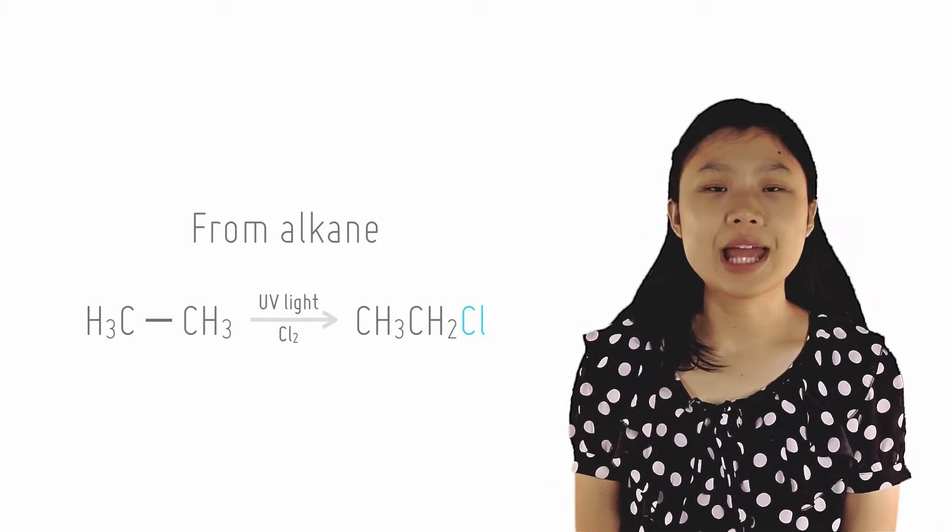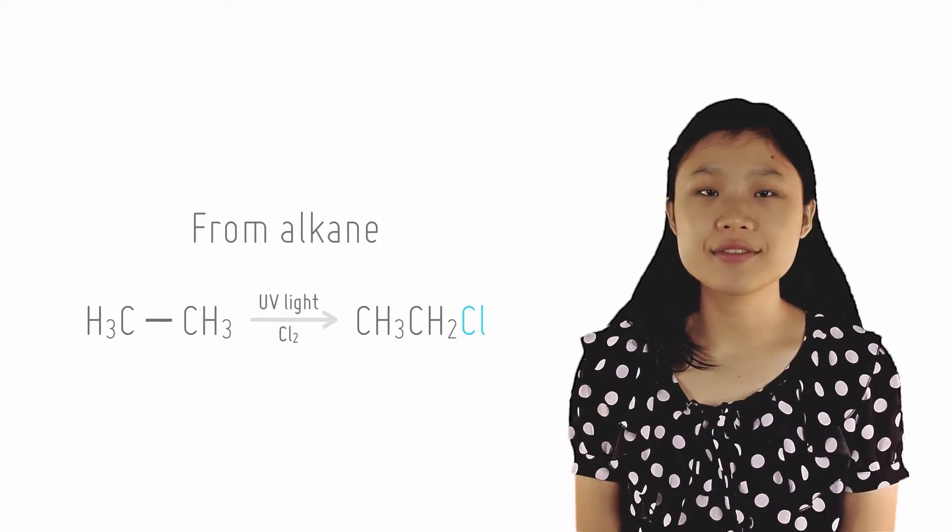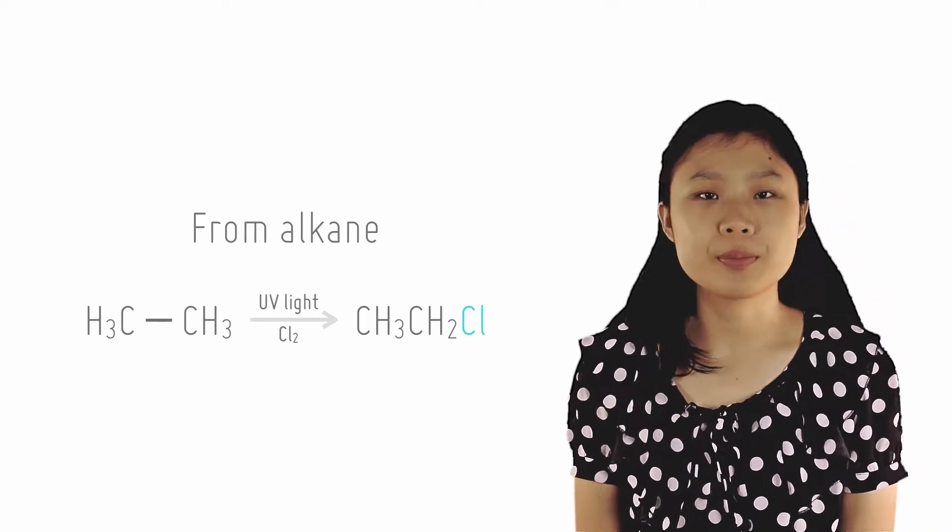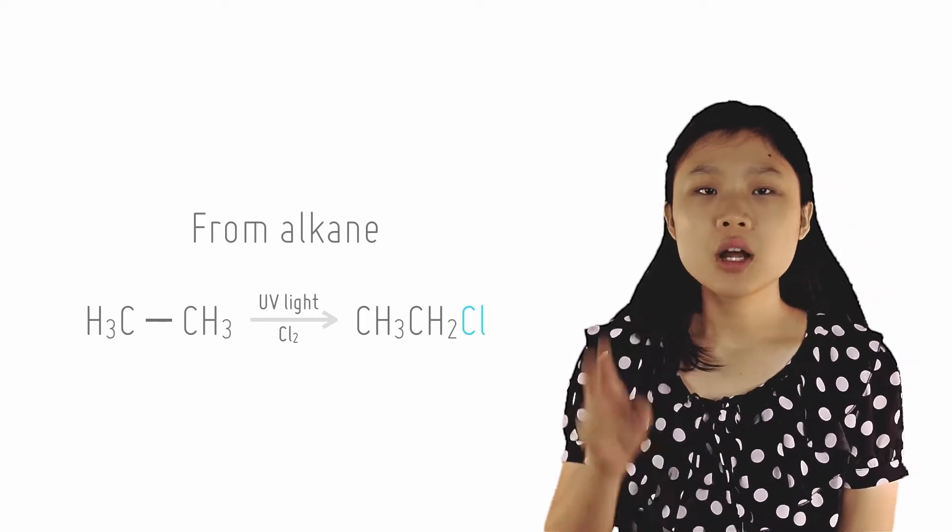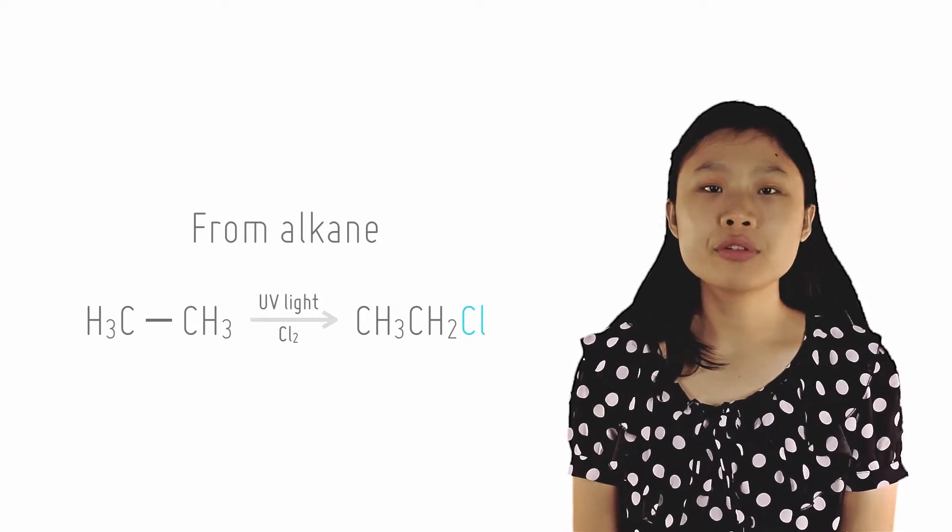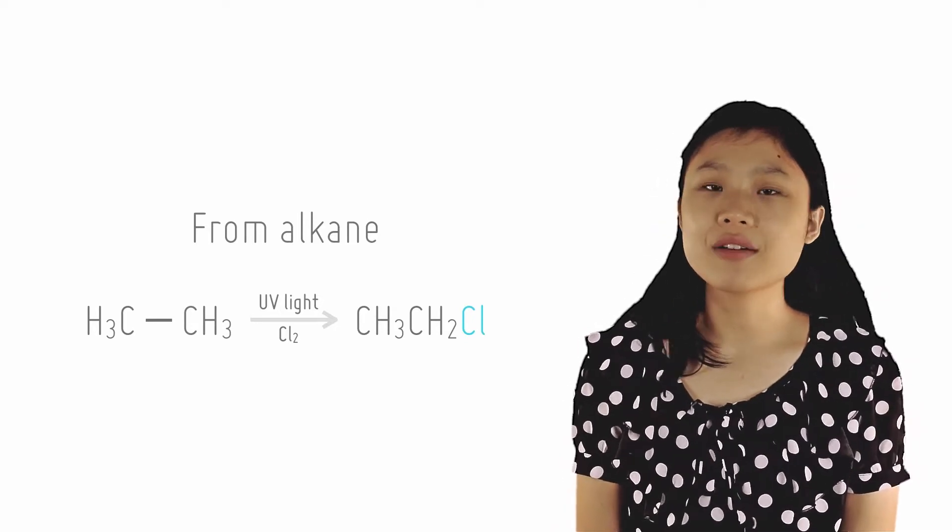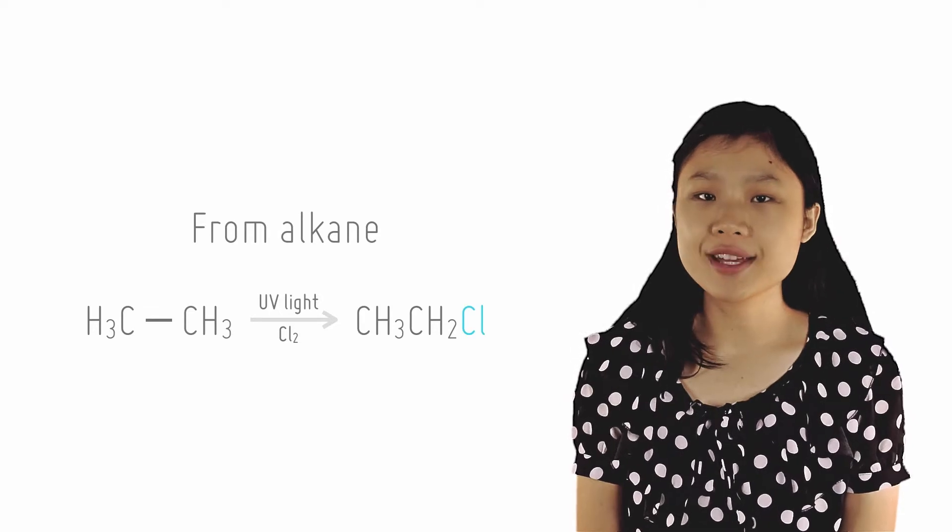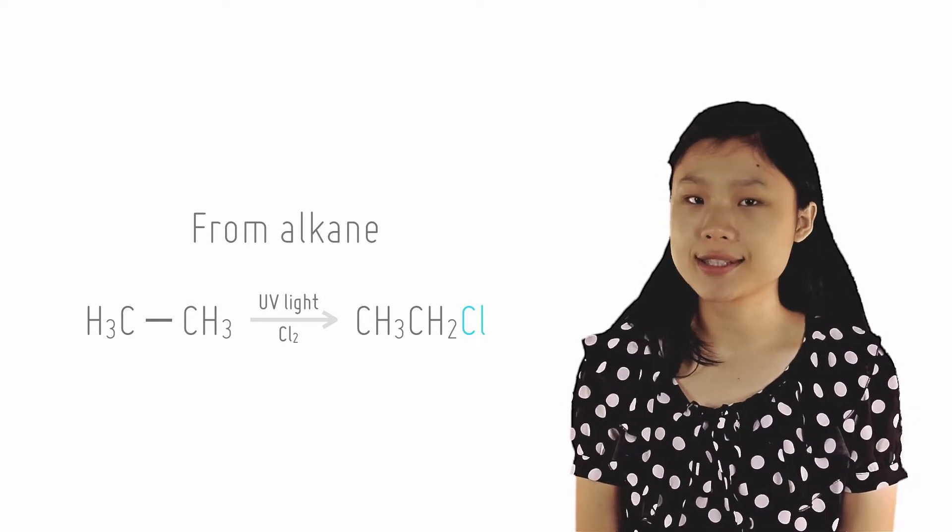Before we move on to talk about some of the chemical properties of halogen derivatives, we first need to know how they can be prepared and obtained. Two of the preparation methods have already been covered in previous lectures: free radical substitution from alkanes covered in the alkanes lecture and electrophilic addition of alkenes covered under alkenes.